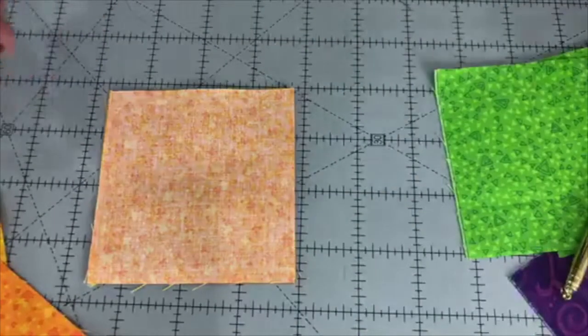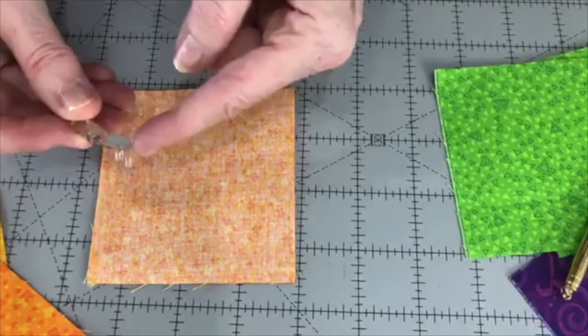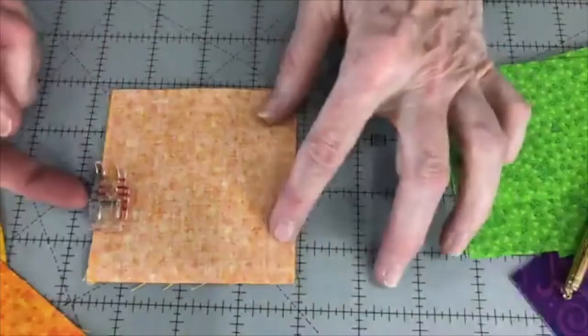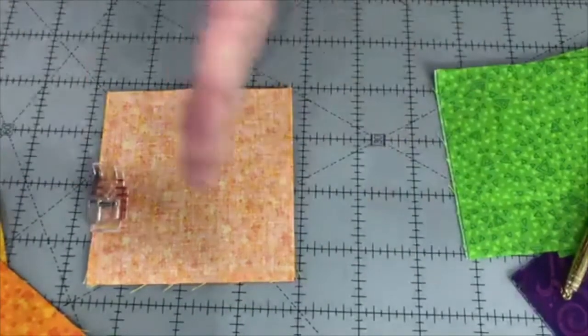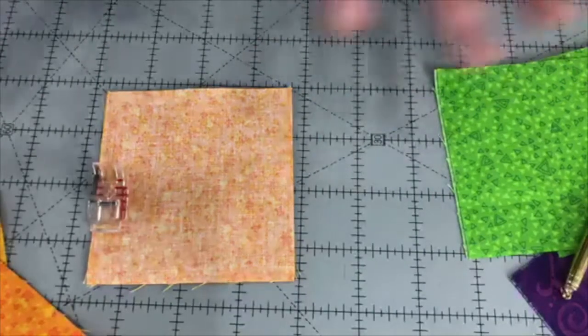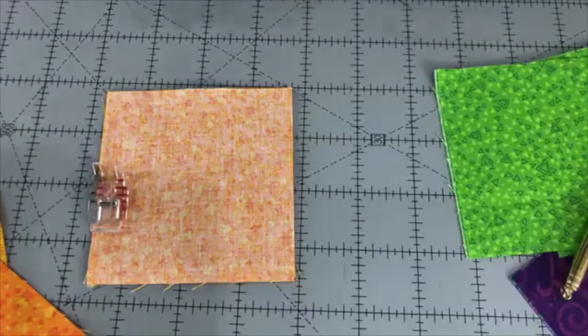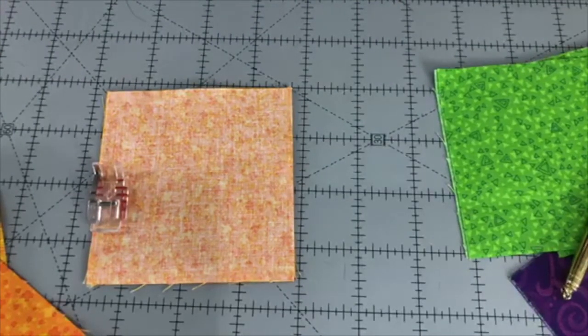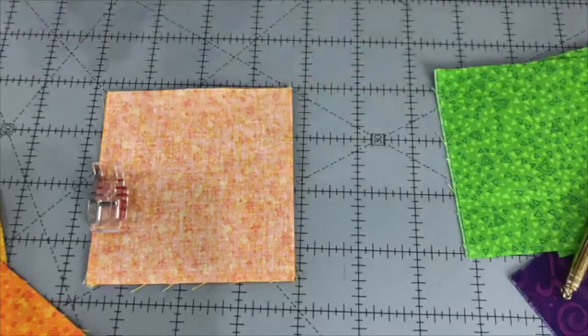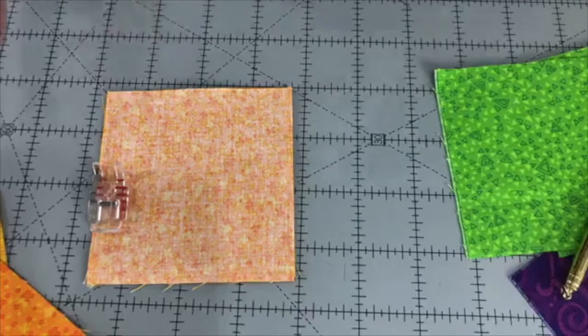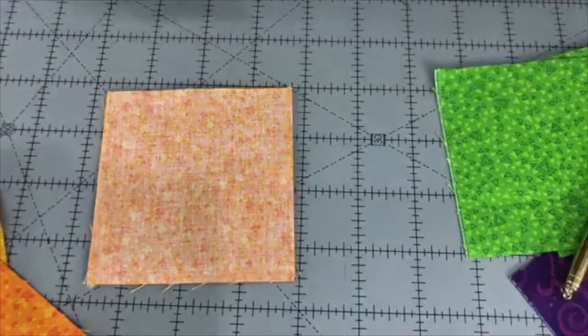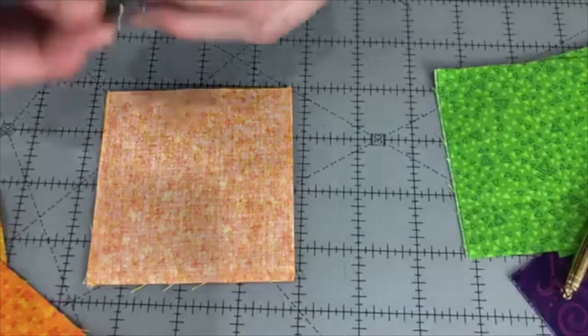Some people like a quarter inch foot, but they like the one with the little flange on it or gauge or whatever you like to call this. And what happens is that means you can butt your fabric up against this and sort of hold it in place. So that's another thing that people like to use. But we all assume that when we put on our quarter inch foot and we have attached it to our machine, it's the size that we need for our project. And we're going to talk about why that might not always be the case.